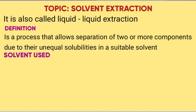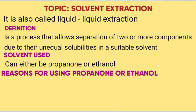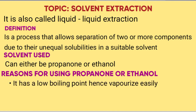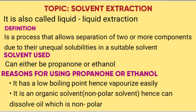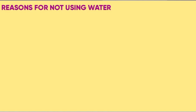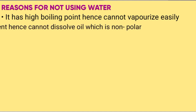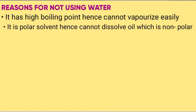The solvent used can either be propanol or ethanol. Reasons for using propanol or ethanol: it has a low boiling point and vaporizes easily; it is an organic solvent, i.e., a non-polar solvent, and can dissolve oil which is non-polar. Reason for not using water: it has a high boiling point and cannot vaporize easily, and it is a polar solvent, hence cannot dissolve oil which is non-polar.